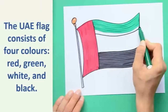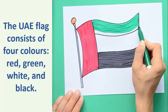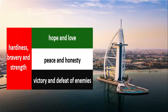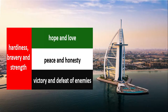The UAE flag consists of four colors: red, green, white, and black. Red represents hardiness, bravery, and strength. Green represents hope and love. White represents peace and honesty. Black represents victory and the defeat of enemies.